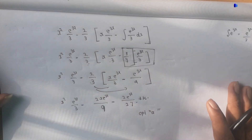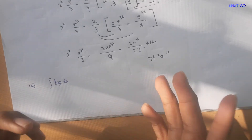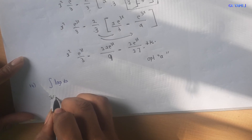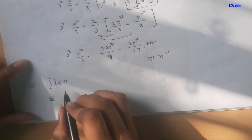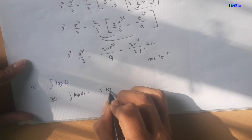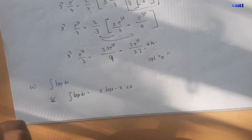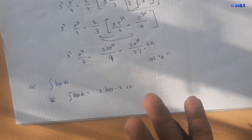Sum number 14: evaluate the integral of log x dx. Using the integration by parts formula, the result is x log x minus x, plus k. This is the standard formula for the integral of log x.